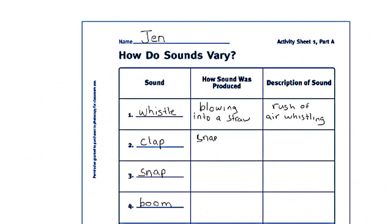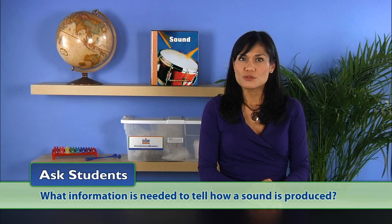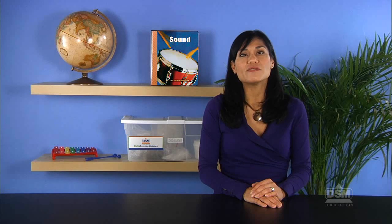Then, have them look at the other two columns and record how they produce the sound, followed by what the sound is like. Ask students: what information is needed to tell how a sound is produced? They should record both the materials and the kind of action they used to produce each sound.